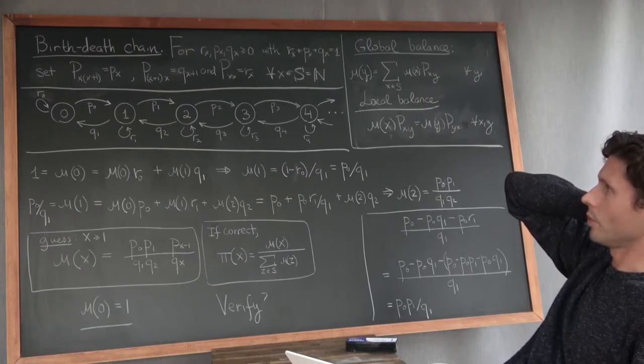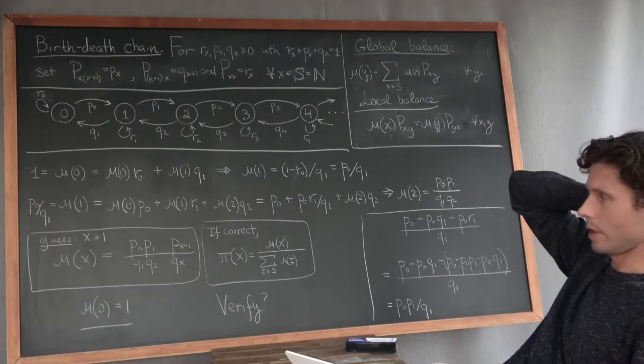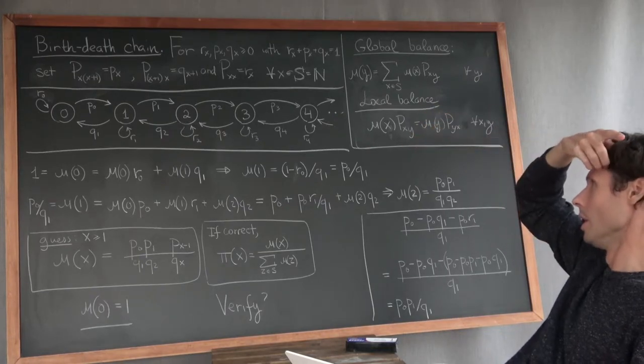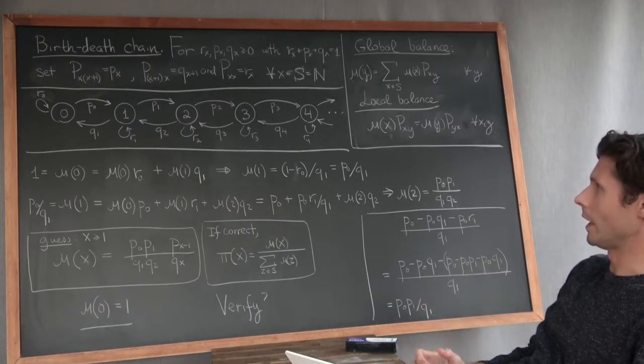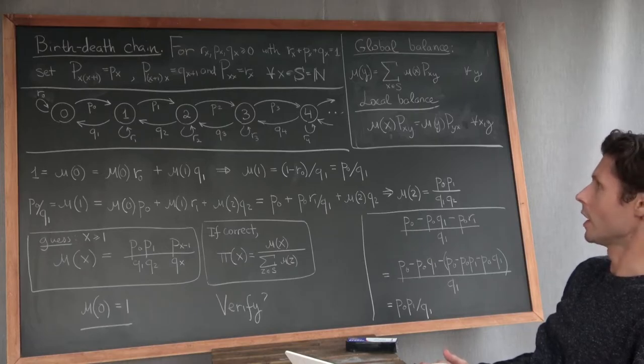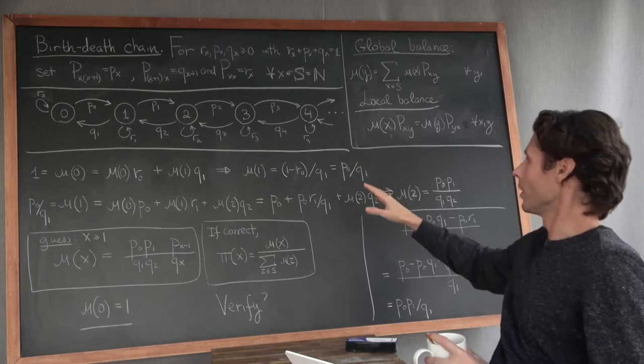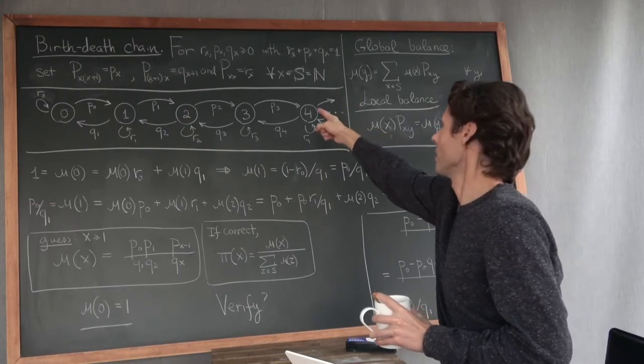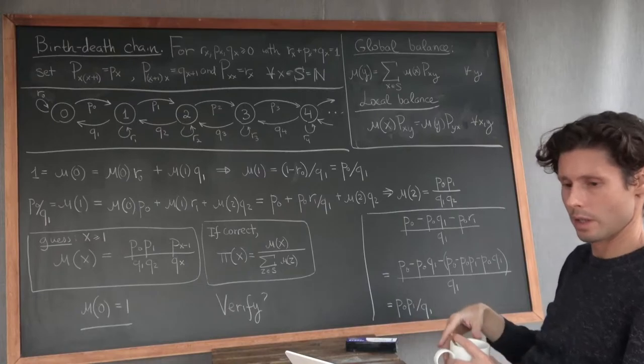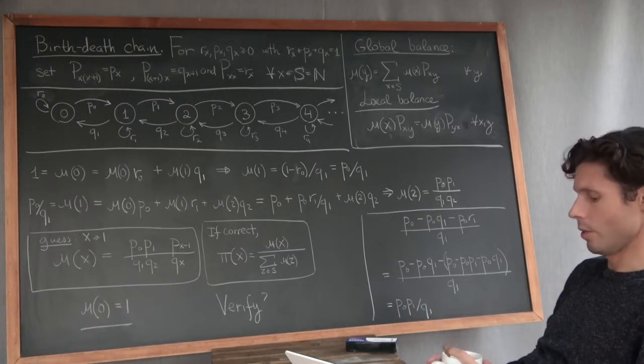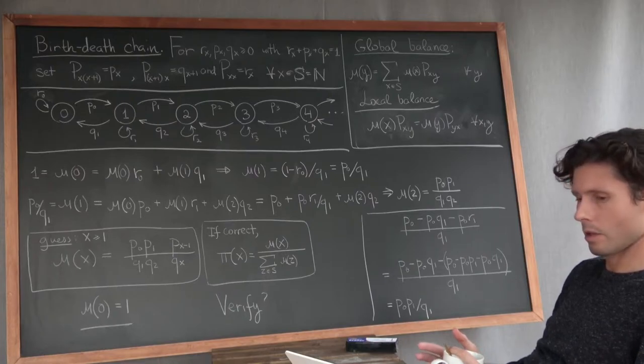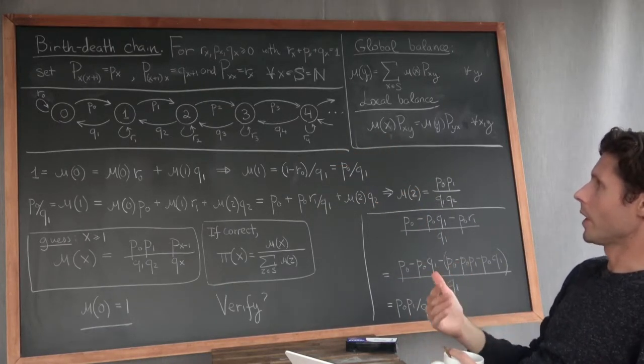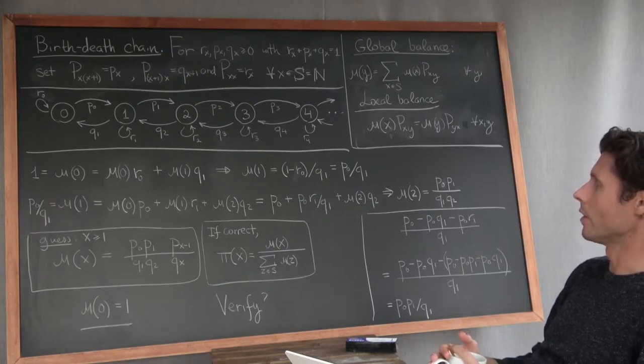This is a very general example. The Ehrenfest urn is actually a special case of this. To see how, you have to set a bunch of transitions to zero. First of all, the Ehrenfest urn was a finite state space Markov chain. If you had four particles, for example, you would then just set P4 to zero so that you don't get a transition further. And you would set maybe this one to zero and tie off the other states. Maybe set Rx equals one for all x greater than four, so that they're just all absorbing states and the only part that matters is this one.